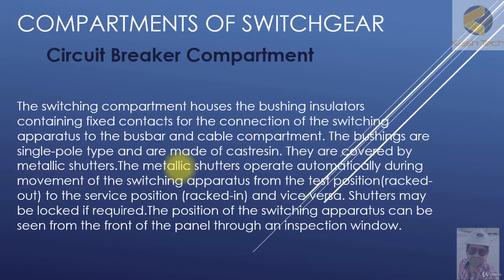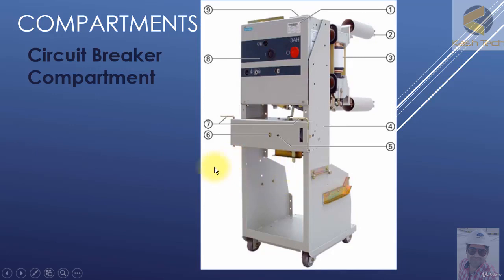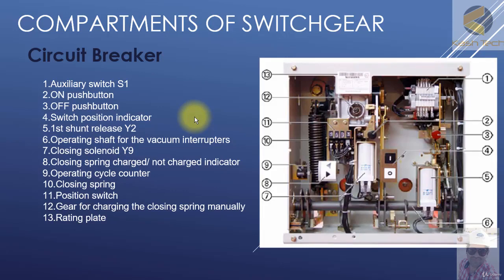After that, I will be explaining the circuit breaker compartment. In this section I will explain the grating plate, contact plug, and pole. I will also introduce the circuit breaker trolley, which is inserted into the compartment. We will see in detail the different components of the compartment, circuit breaker, and its mechanism.